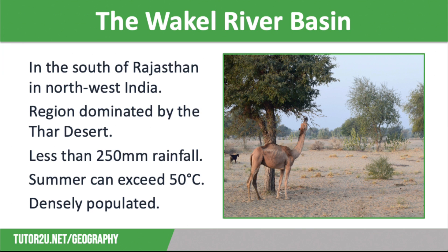The Wackal River Basin is located in the south of Rajasthan, an extremely arid region dominated by the Thar Desert in northwest India. The climate is extreme — it receives less than 250 millimetres of rainfall annually, with most of this falling during the monsoon season. Temperatures can also exceed 50 degrees in the summer, which means evaporation rates are high.